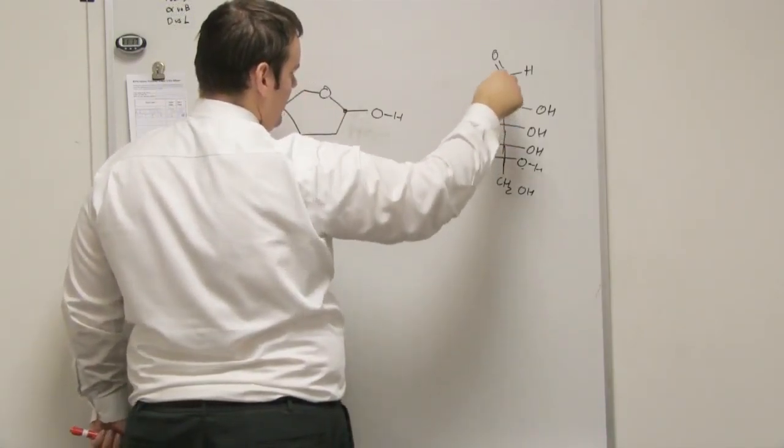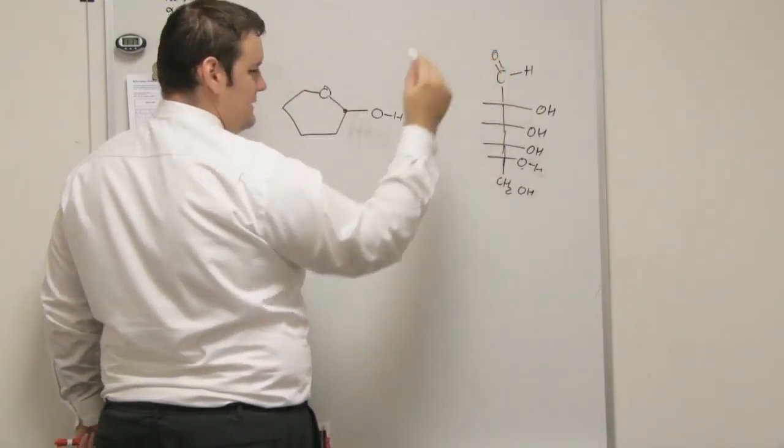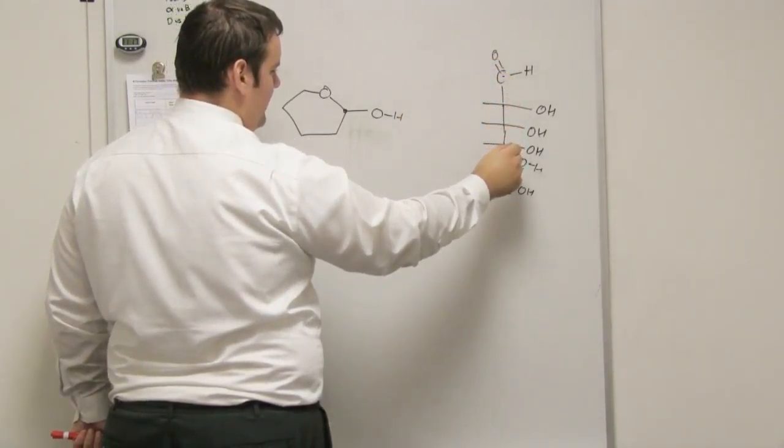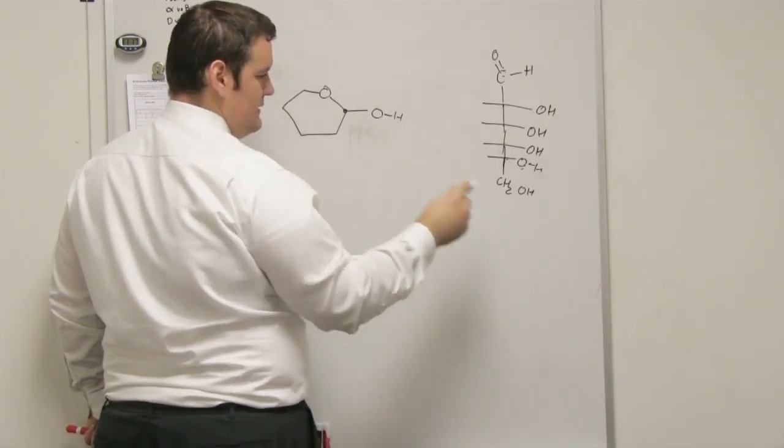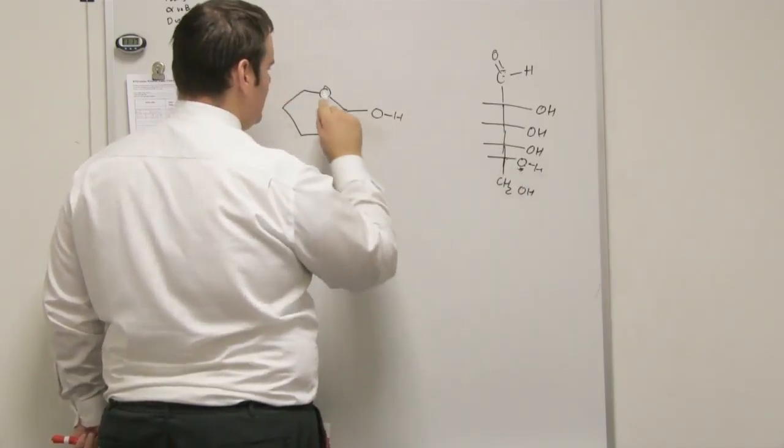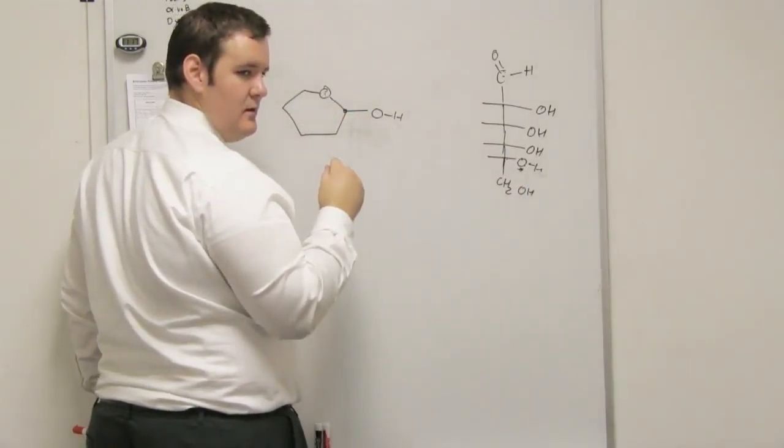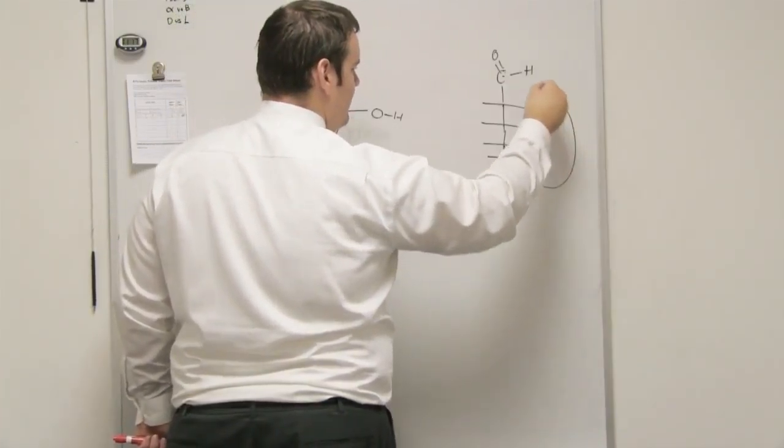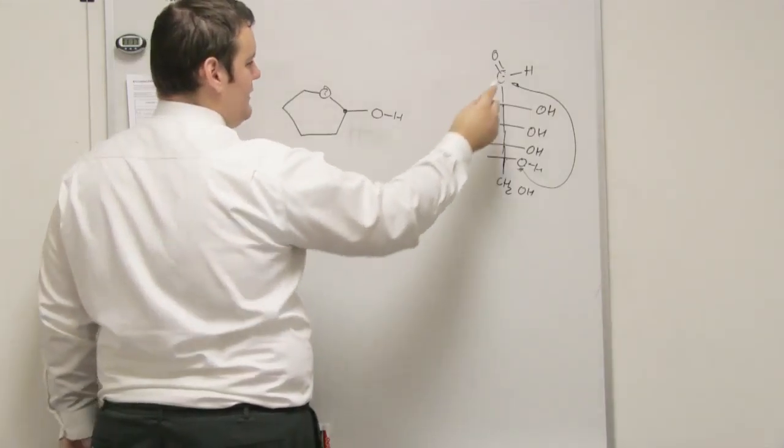Whatever this oxygen is depends on what type of ring you want. So the way you can know which oxygen it's going to be is like... Let's say we want a six-member ring. One, two, three, four, five, six. So this oxygen is that guy. So it just curls the chain. Yeah, this will attach right there.